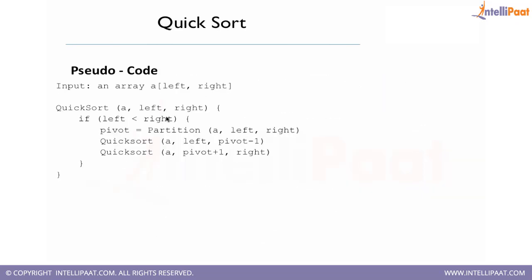Here is the pseudocode for quick sort. The quicksort method takes an input array. If left is less than right — meaning we have a valid condition — we select one pivot and partition the array. We have two portions: left index to pivot minus one, and pivot plus one to right index. We perform quicksort recursively on the left portion and then on the right portion. We keep dividing until we reach a single element — nothing to solve — and then propagate the result back up.